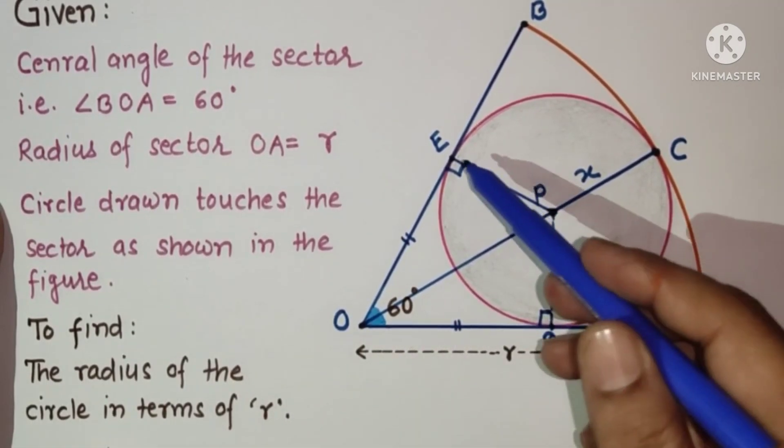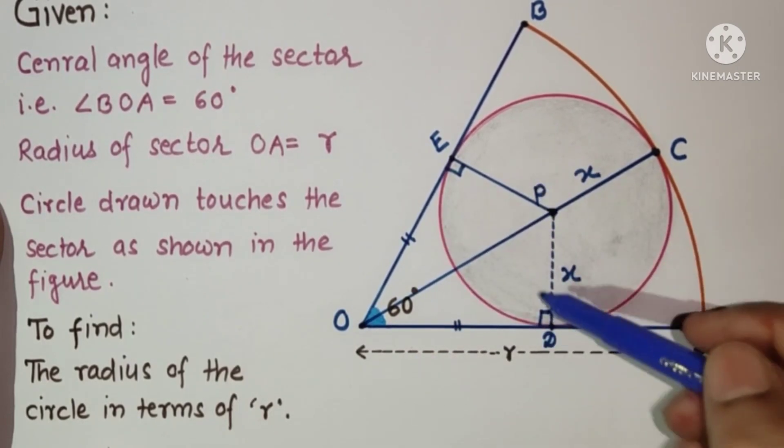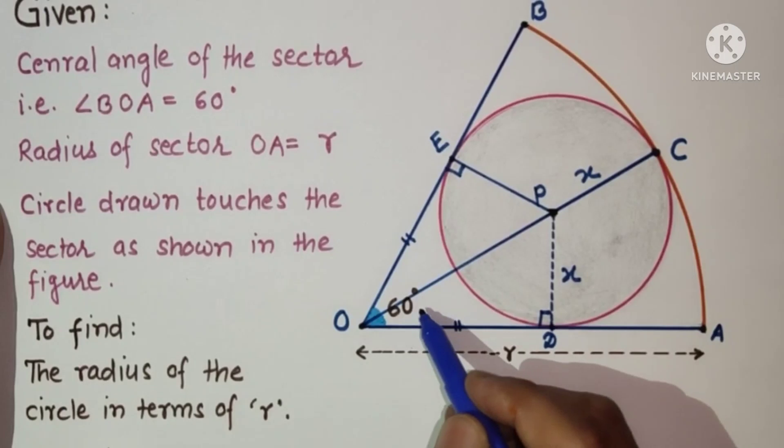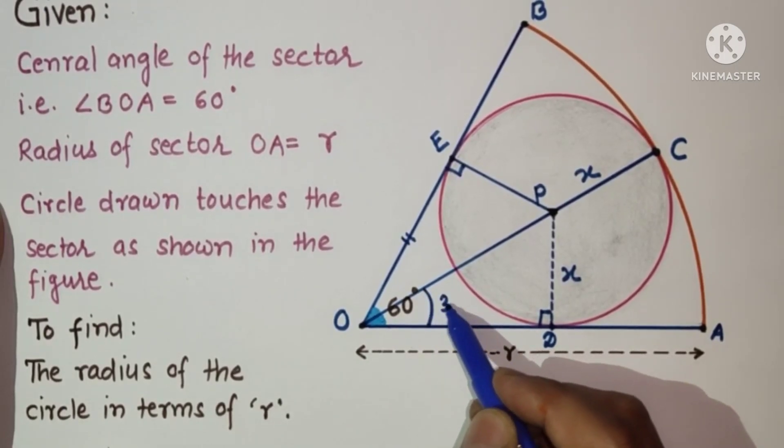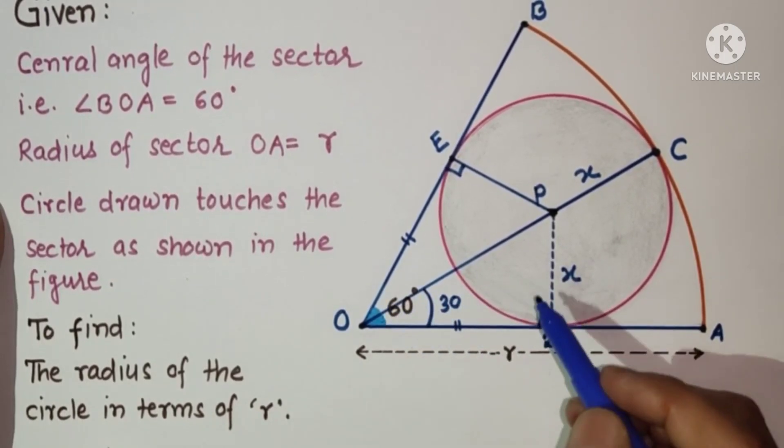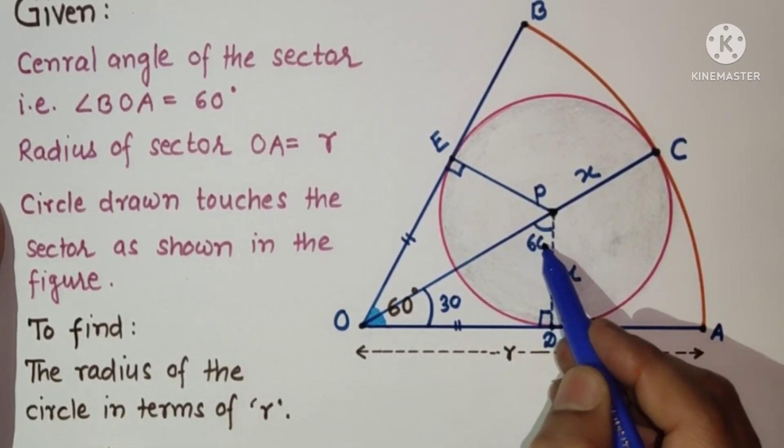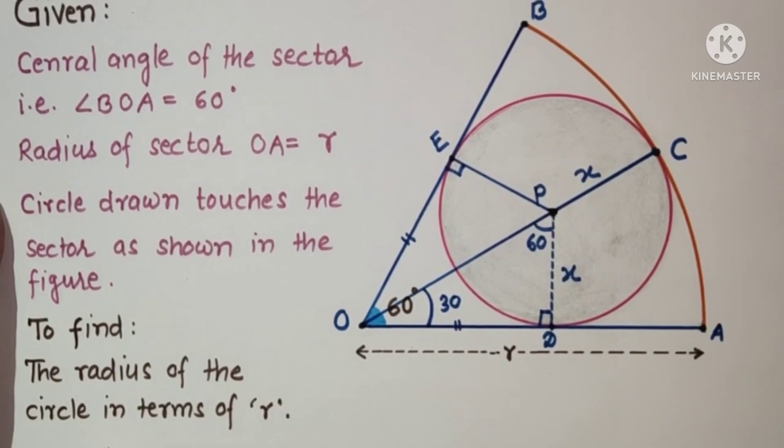PD and PE are radii, so by SSS test these two triangles are congruent. So this angle is 30, this angle is 30, this is 30, this is 30, this will also be 30. And if this is 90 and this is 30, then this will be 60. So we can use the 30-60-90 theorem.